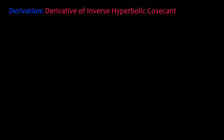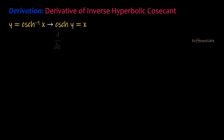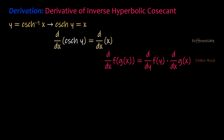Derivation of the derivative of the inverse hyperbolic cosecant function. Let y equal the inverse hyperbolic cosecant of x, which means that the hyperbolic cosecant of y is equal to x. Take the derivative with respect to x of each side of the equation. Apply the chain rule as in the previous derivations. The derivative of the hyperbolic cosecant of y is the negative of hyperbolic cosecant of y times the hyperbolic cotangent of y.